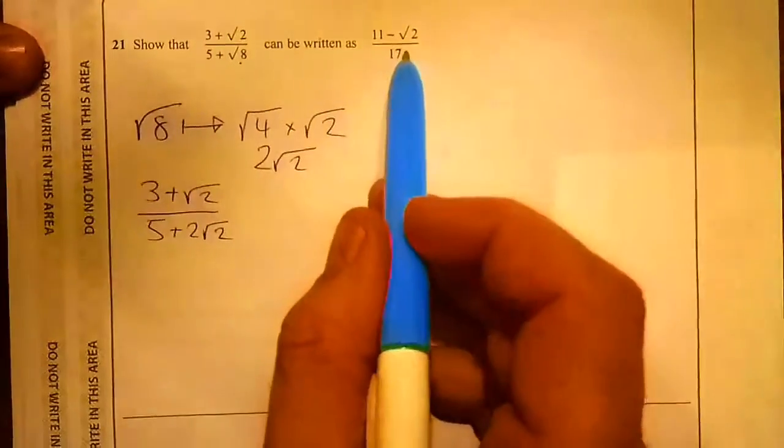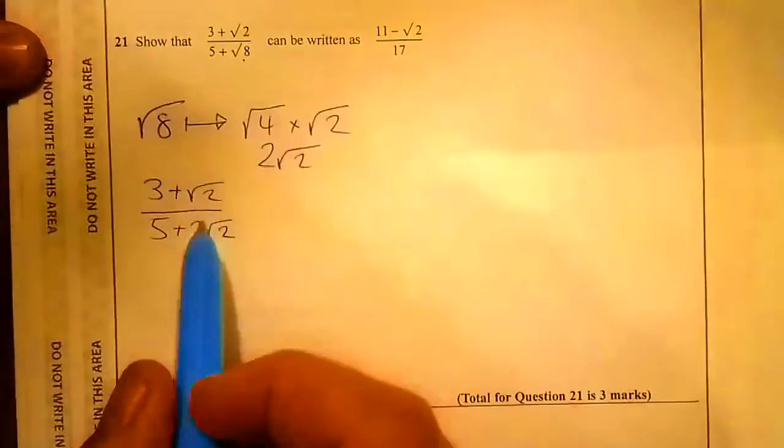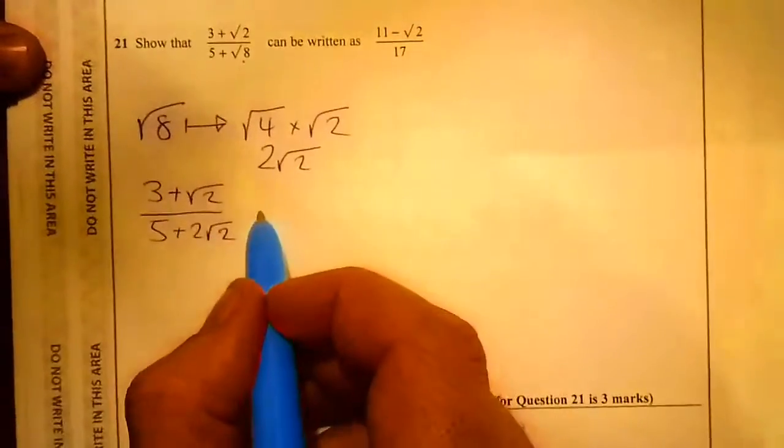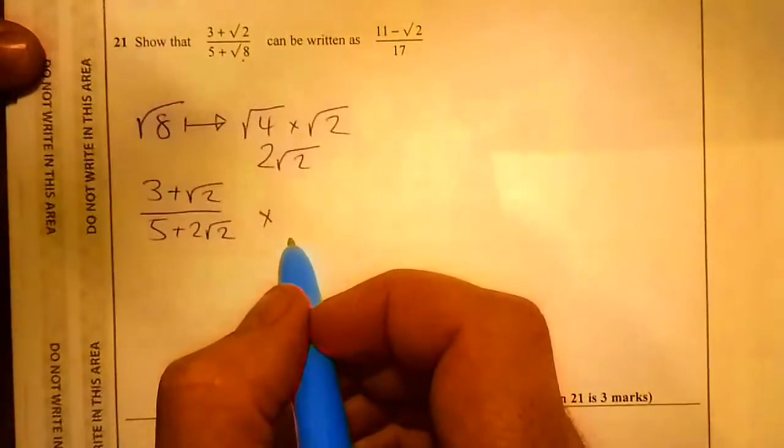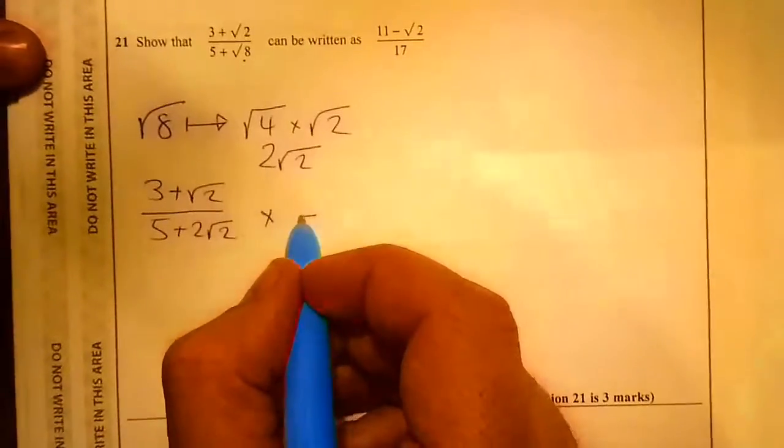Now if you look at this, I've got 17 on the bottom. That means I need to get rid of this √2. The only way to do that is by using the difference of two squares.